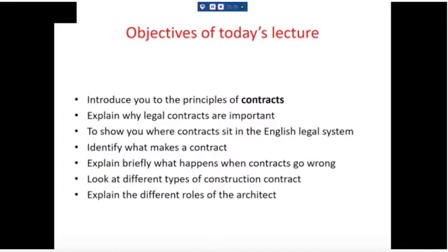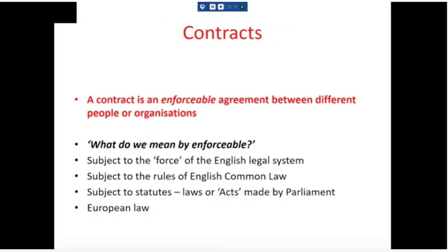We'll look very briefly at what happens when things go wrong, and then at the very end I'll give you a summary of different types of construction contracts and how that feeds into the contracts architects have with their clients — what we call professional services agreements. I'm going to relate this to something you'll all be familiar with. The headline here is: a contract is an enforceable agreement between different people or organizations.